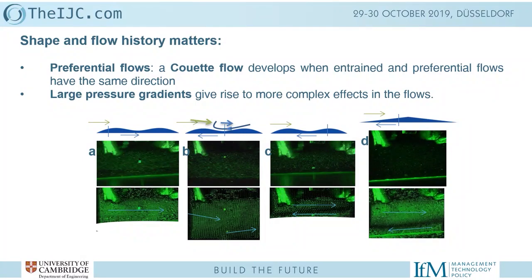The conclusions from studying single nozzle devices: the shape and the flow history matter. By flow history I mean those preferential flows — depending on what's going on around your printer even before the substrate gets there, you can have different effects. You can develop a nice quiet flow in the same direction as the entrained flow and the drop will behave in an expected manner. Or your preferential flow could go against that, giving rise to shear flows. Shapes with larger pressure gradients tend to behave in a more complex way.